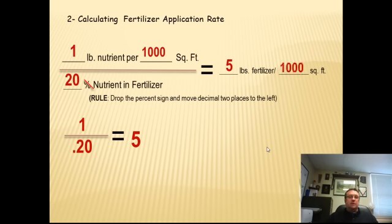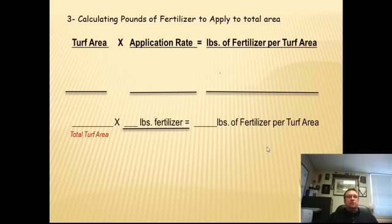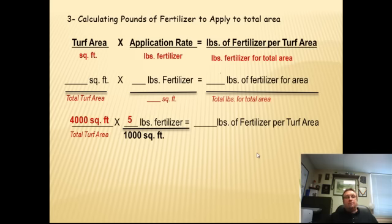Step three: we're now going to calculate the pounds of fertilizer to apply to the total area, which we determined in the very first part was 4,000 square feet. As you set the formula up, we know the turf area is 4,000 square feet. We know the application rate is five pounds per 1,000 square feet. Now we're going to look for how many pounds for the total given area. You take those numbers and start plugging them into what you need to do. We know it's 4,000 square feet total turf area, and it's five pounds per 1,000 square feet.